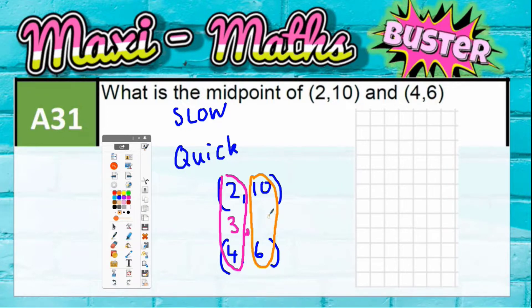And then you go in the middle of the second two numbers. So in the middle of 6 and 10 is going to be 8.